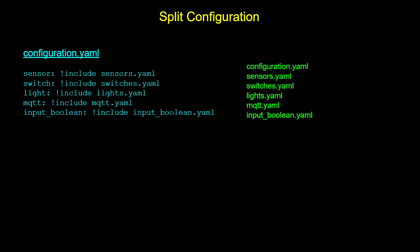With split configuration, you can take all of your sensors, all of your switches, all of your lights, and whatever else you might have, and split those out into individual YAML files that are included in the main configuration.yaml. This definitely helps make your configuration.yaml a little more manageable and can make it easier to find and edit your entities later on.